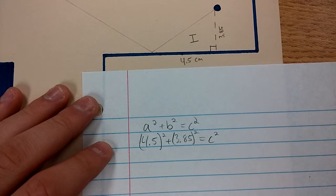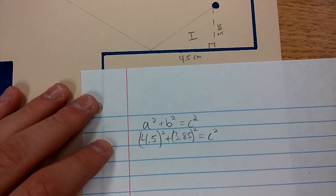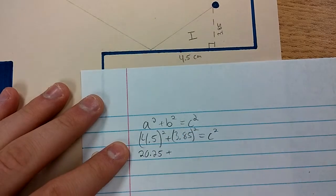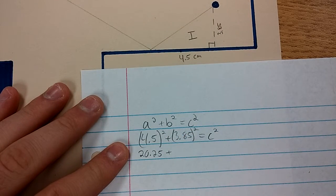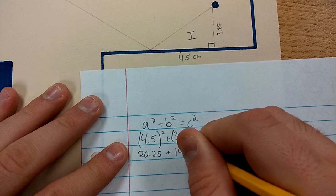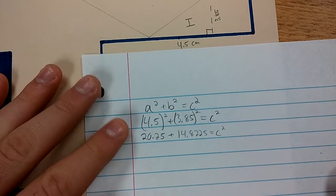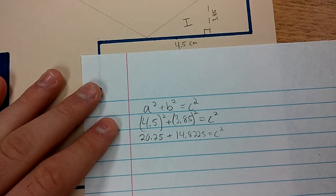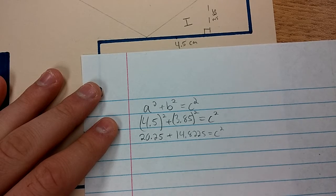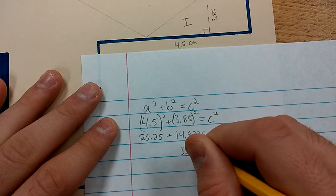Now use your calculator to square 4.5 and you get 20.25 plus 3.85 squared, 14.8225. That's an exact answer. Combine these two together. So c² is 35.0725.